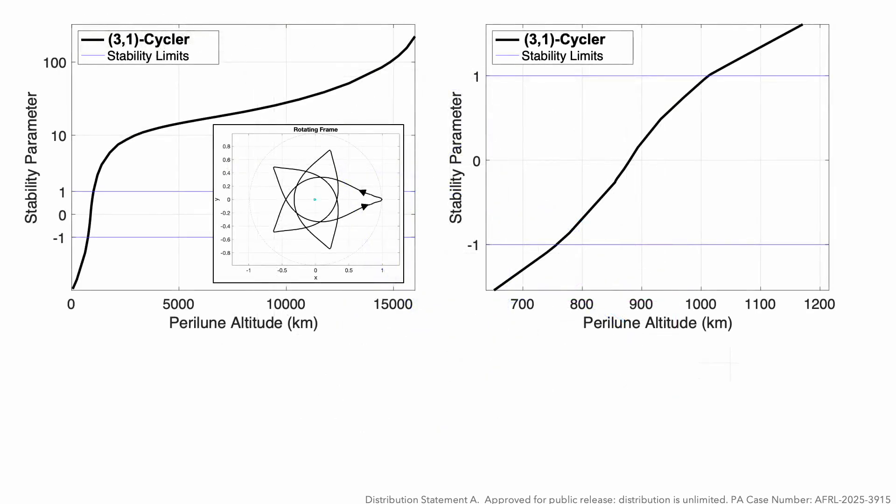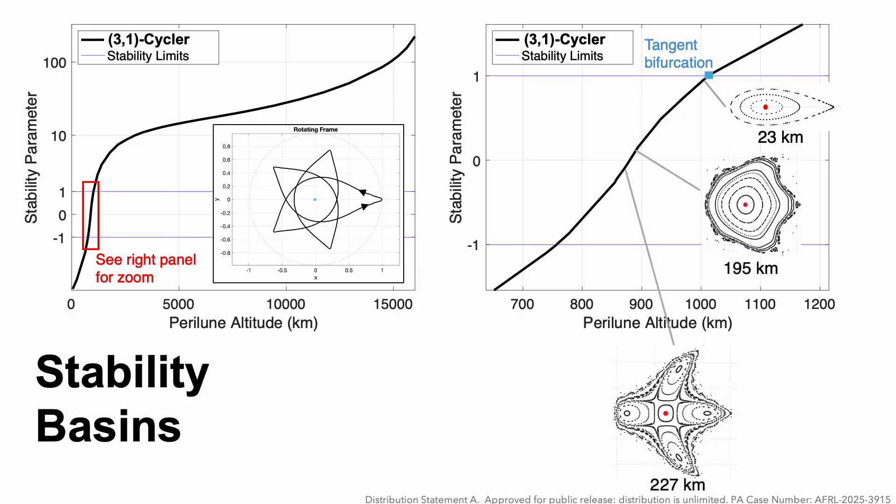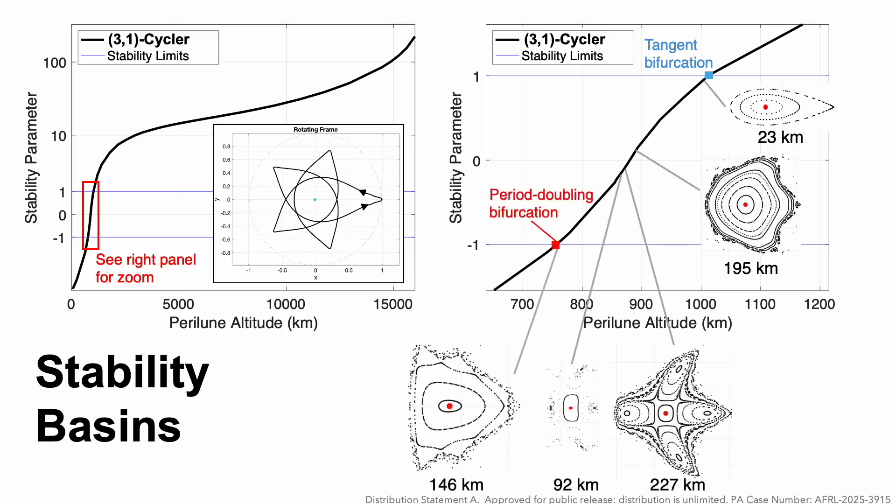Here's a (3,1) cycler, which just has one close pass by of the Moon, shown to scale in that inset. For this cycler, we're looking at just that one stable window. These stability basins are a measure of robustness. Once we just enter the stability region, these can be pretty small, like 23 kilometers. But as we go through the stability region, these can reach hundreds of kilometers in size.